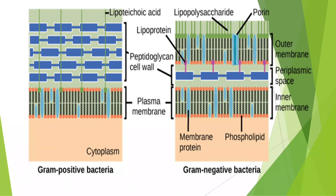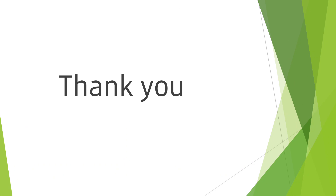This is the difference between gram positive bacteria and gram negative bacteria. The diagram shows the thick peptidoglycan layer versus the thin peptidoglycan layer. When we use the gram staining technique, the thick peptidoglycan layer absorbs crystal violet, while the thin peptidoglycan layer releases the crystal violet and shows a pink color. Today's question: what is the difference between gram positive and gram negative bacteria? Thank you.